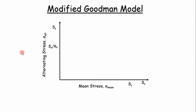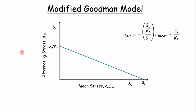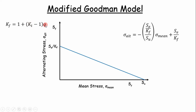Before we go develop the modified Goodman model in Excel, let's look at the major components of how to develop it. You have your alternating stress versus your mean stress graphed. You're drawing a line from your endurance limit divided by a fatigue stress concentration factor all the way to your ultimate strength. The fatigue stress concentration factor is calculated with an equation that includes your geometric stress concentration factor and a notch sensitivity factor, which you look up in tables depending on the geometry and the material.